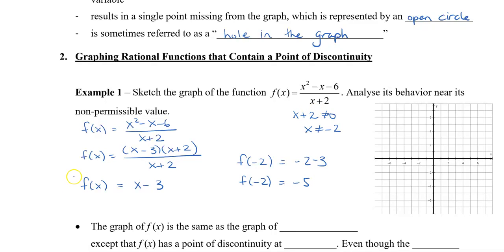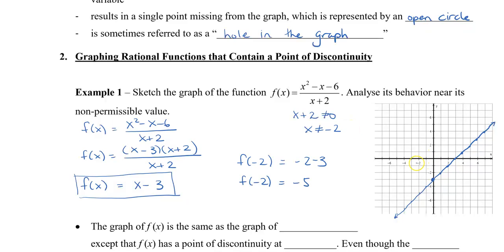I can graph this rational function by simply graphing the line, since I've reduced it to a linear function. To graph this, I plot the y-intercept of negative 3 and use a slope of 1. I connect all the points, but because x can't equal negative 2, I go to negative 2 on the graph — which gives the point (negative 2, negative 5) — and place an open circle around that point.